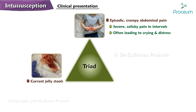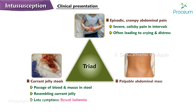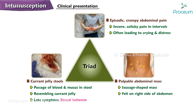Current jelly stools: the passage of blood and mucus in the stool, resembling currant jelly, is a late symptom indicating bowel ischemia. A palpable abdominal mass — a sausage-shaped mass, generally felt on the right side of the abdomen — is also a significant indicator.